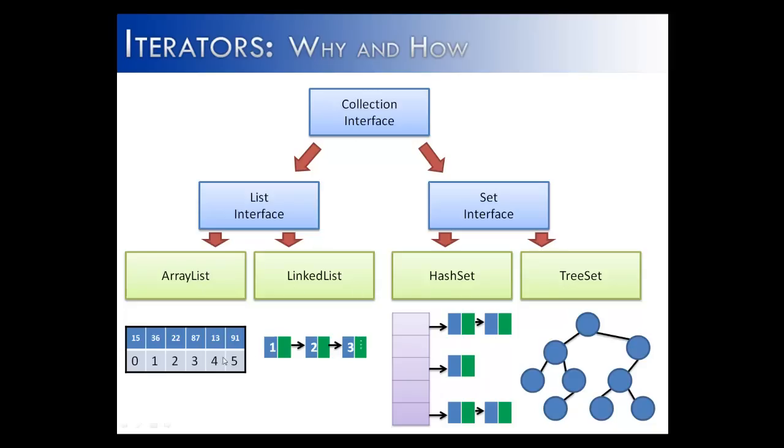You can see down here that the implementation of each is very different. A tree looks different from a hash table, looks different from a LinkedList, looks different from an ArrayList. So all of them store data in a different way. But what iterators do is allow you to loop through them or iterate through them in a standardized way.